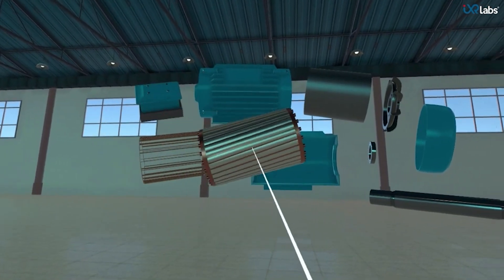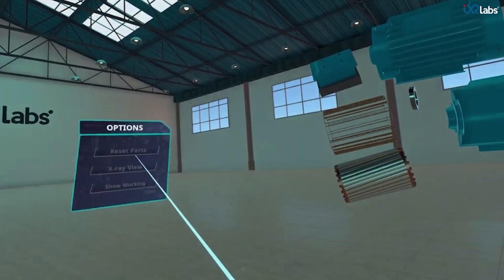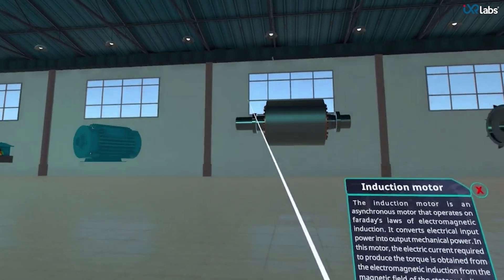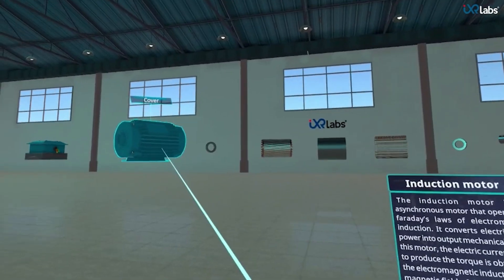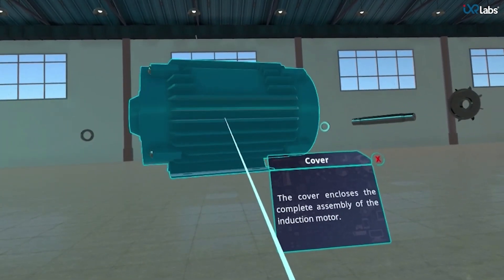To know more about each part and its functioning, let's click on the separate parts option. All the parts are spread across our virtual space and we can see a small description telling us about the induction motor. Clicking on any part brings it closer and a brief description of that part appears.